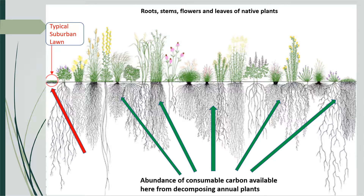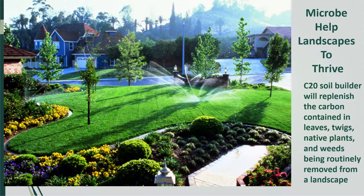But the environment we have created in our landscapes does not include the carbon-rich plants pictured in this native plant illustration. The typical suburban lawn or corporate campus does not produce the carbon needed to maintain a micro-population capable of decompressing the soil. With the root systems of native plants and weeds eliminated and the routine removal of the natural debris that falls from trees and shrubs, the microbe population declines to a level that cannot create the healthy, porous soil that lawns and landscapes need in order to thrive.